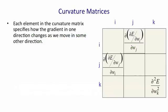So curvature matrices look like this. For each weight, WI or WJ, they tell you how the gradient in one direction changes as you change in another direction. In other words, as I change weight I, how does the gradient of the error with respect to weight J change? That's what a typical off-diagonal term tells you. The terms on the diagonal tell you how the gradient of the error changes in the direction of a weight as you change that weight.